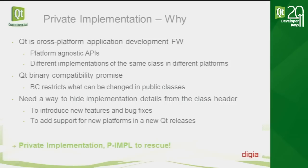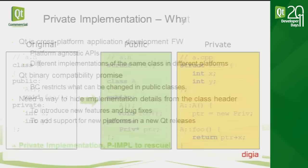Being a widely adopted framework, Qt typically needs to provide some kind of binary compatibility. To maintain that, we need to follow certain rules — for example, it's not possible to add a member variable to a class because that would change the object size. But we still need to be able to extend the framework during its lifetime, adding bug fixes, new features, or new modules. To tackle these binary compatibility restrictions while maintaining extendability, some solution is needed, and private implementation is that solution.